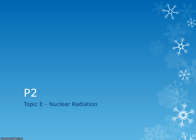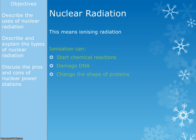Our next topic in physics is entitled nuclear radiation — actually one of my favourite topics. Just to be clear on what we mean by nuclear radiation: it is something that's released from the nucleus of an atom that can ionise other things. Ionise just means that it can give or take electrons.